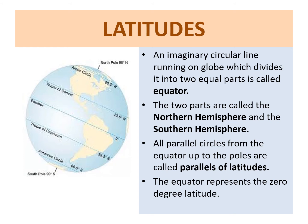What are latitudes? First of all, we will learn about the equator. What is the equator? The equator is an imaginary circular line which runs on the globe, dividing it into two equal parts. The part to the north of the equator is called the Northern Hemisphere, and the part to the south of the equator is called the Southern Hemisphere.